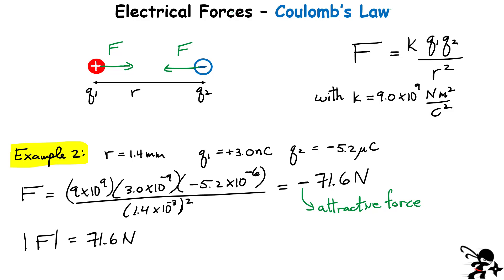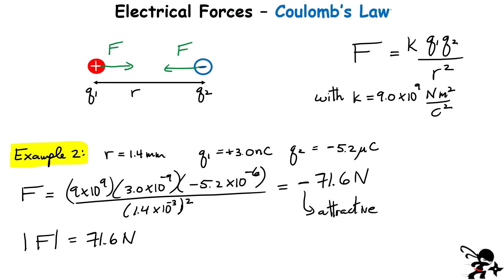The sign convention is worth noting: a lot of people don't include the signs of the charge when using Coulomb's law because you can determine direction from the charges' signs alone. If you do include them and get a negative result, that means it's an attractive force; a positive result means repulsive. Either approach gives the same magnitude and direction if you understand what's going on between the charges.